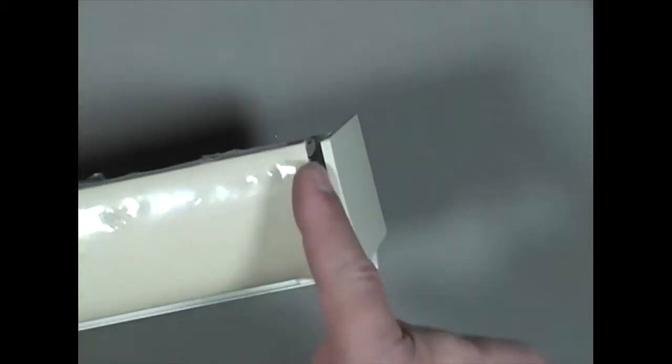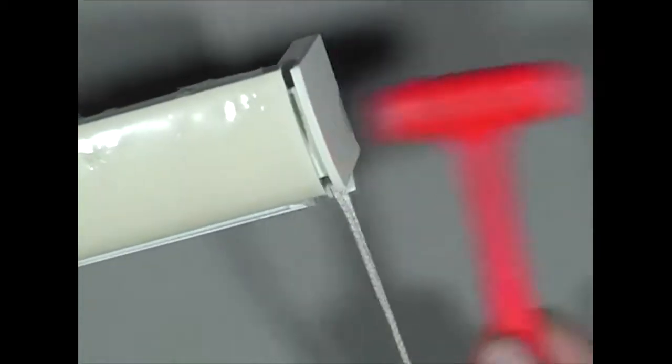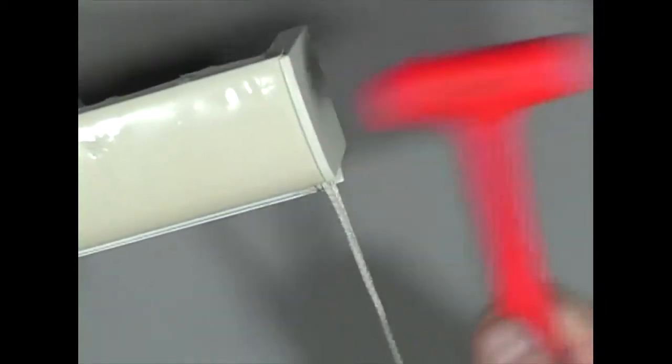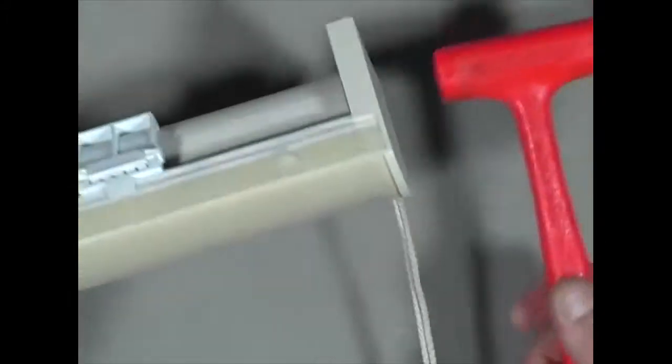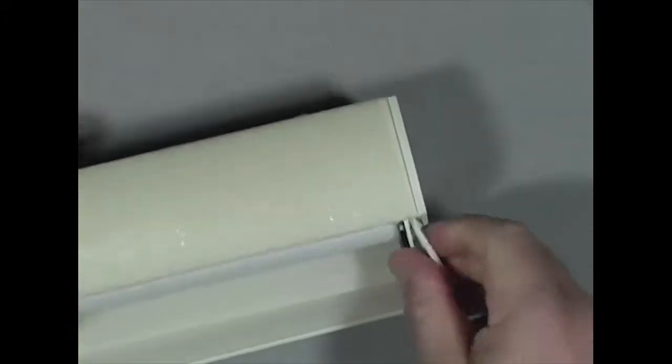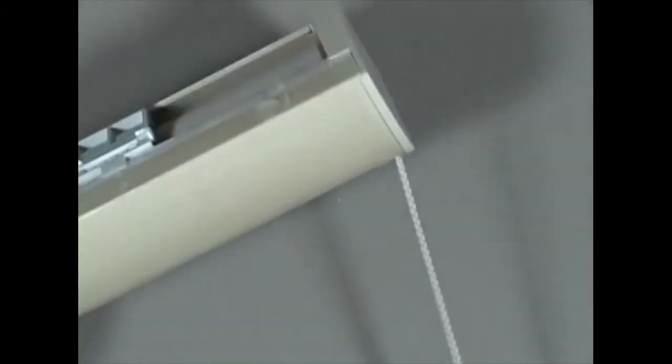Then line up the face feature of the end cap with the headrail here. Just take a hammer and tap it all in, working in circles around the surface. Get it all in place. I've just completed a cord loop change on my silhouette with Easy Rise shade.